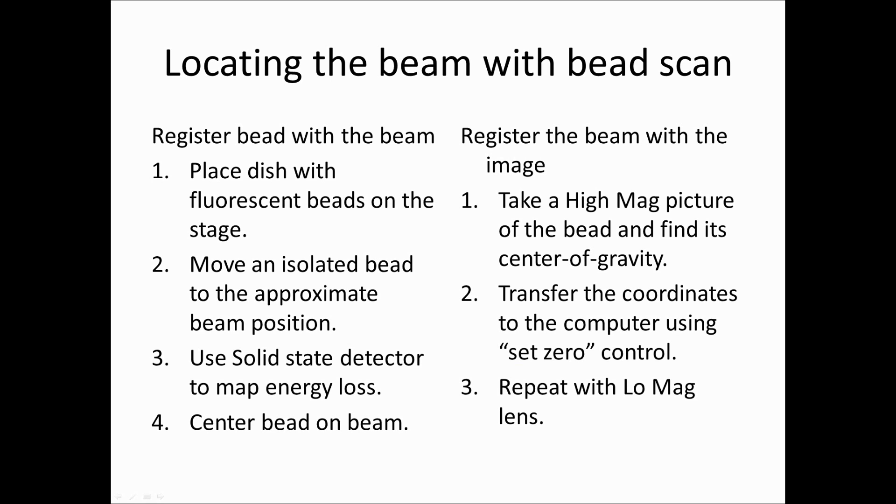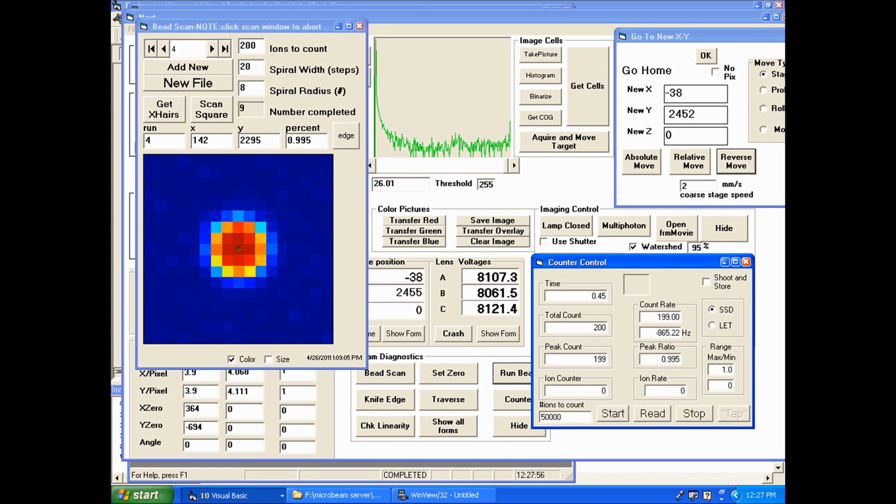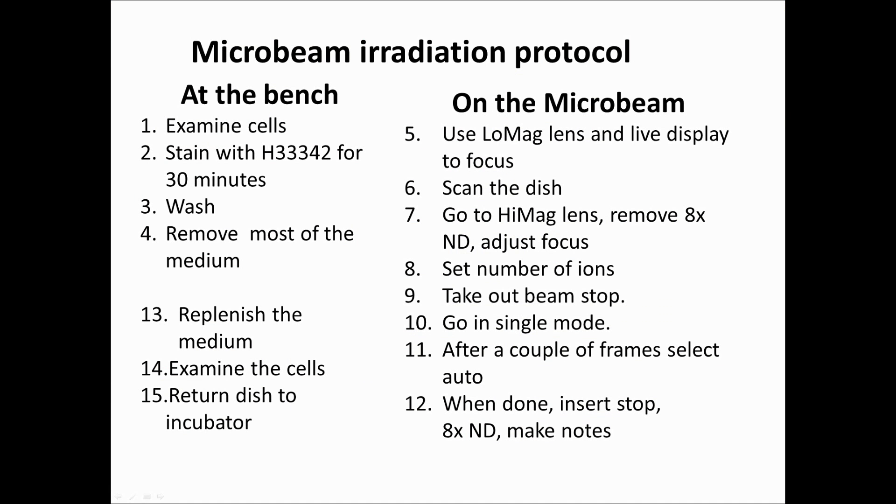So these are the steps going through the bead scan. This is in gory detail. I think you have a slightly different version of it in your books there. But we'll go through this as an exercise tomorrow. But what you get is a picture like this where the dark blue areas are where the particles are missing the bead and the red areas are where the particles are going through the bead. And either the program locates it or you can click on the center of this and that tells you where you have to move to actually center the bead on the beam axis.